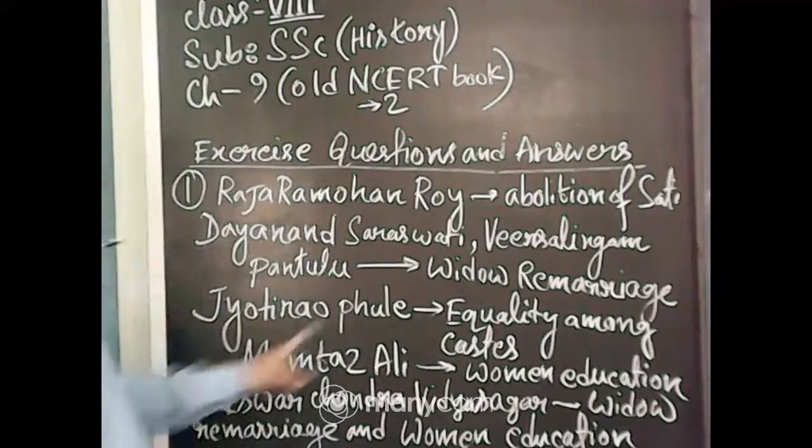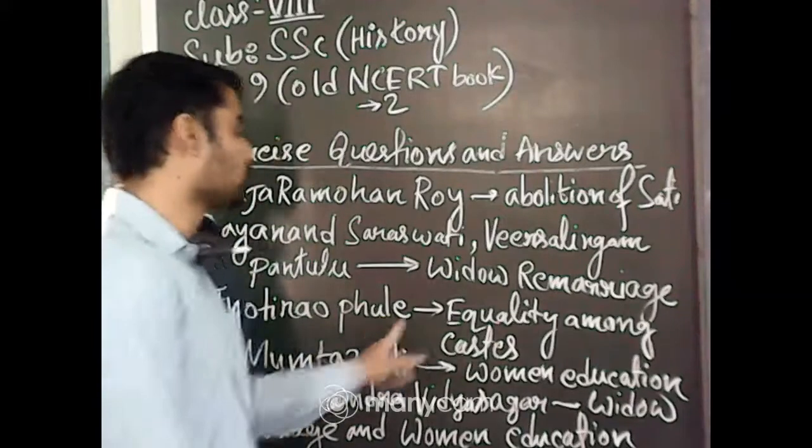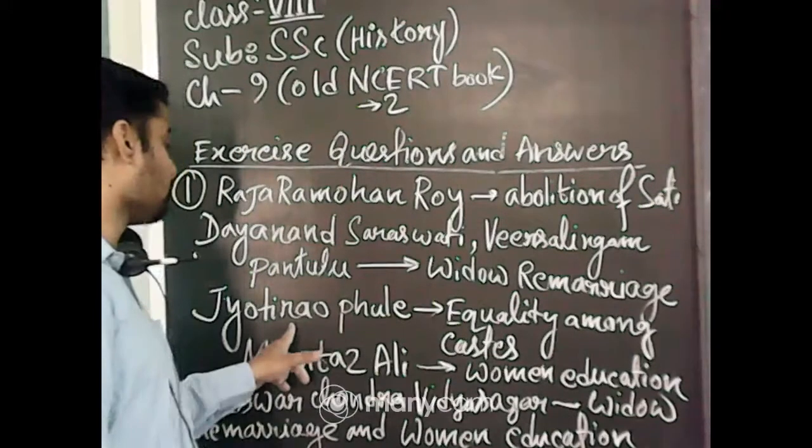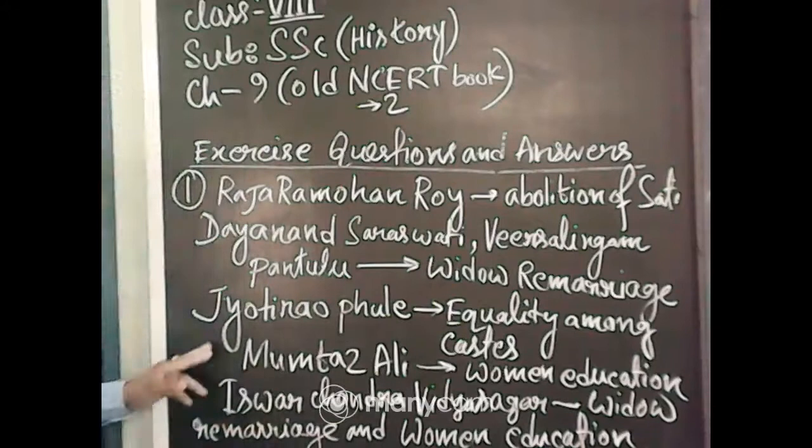Number 3, Jyotirao Phule. Jyotirao Phule worked for equality among castes. This is the important contribution of Jyotirao Phule of Maharashtra.